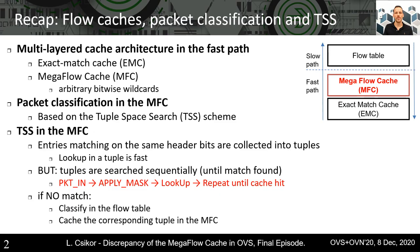In the MFC, therefore, we have the 2-plus-paster scheme as a packet classification algorithm, wherein entries matching on the same header bits are collected into tuples identified by the masked header bits. Within the tuple the lookup is fast; however, the algorithm has to search all tuples sequentially until a match is found.